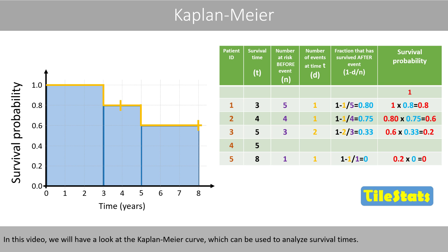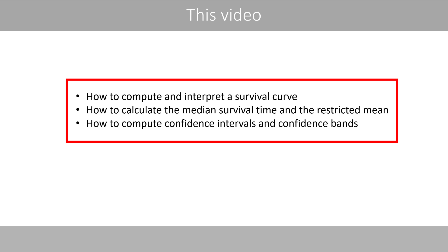In this video, we'll have a look at the Kaplan-Meier curve, which can be used to analyze survival times. We'll first see how to compute and interpret the survival curve, and then see how to calculate the median survival time and their restricted mean. Finally, we will see how to compute confidence intervals and confidence bands.